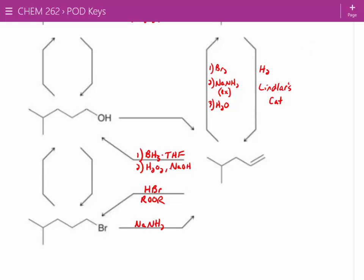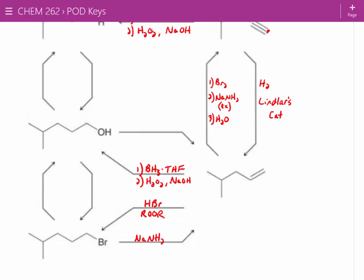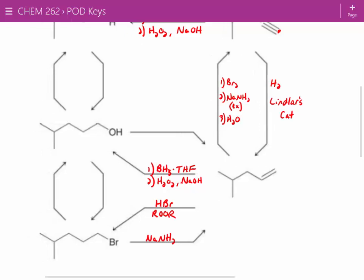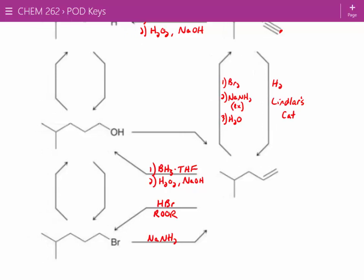If we want to go from our alkyl halide to our alcohol, what can we do? All we need is a nucleophile, right? So I would just use something like NaOH. It's a primary electrophile. It's not going to favor elimination. It'll favor substitution primarily. So you can just add in sodium hydroxide.